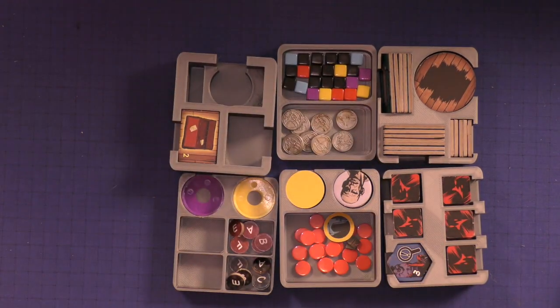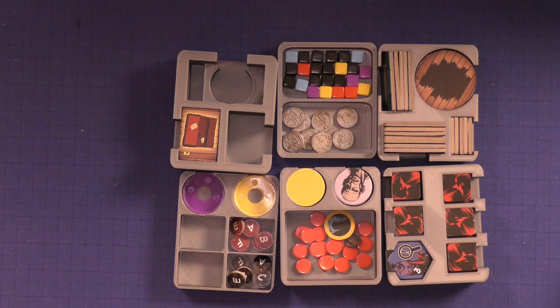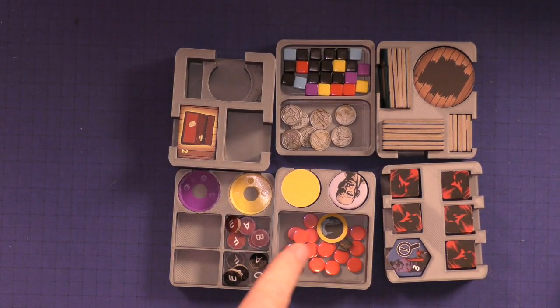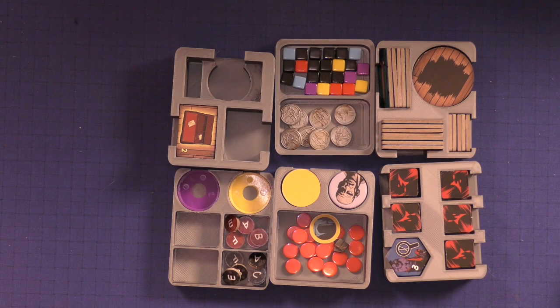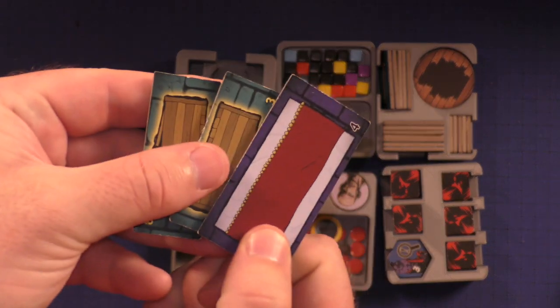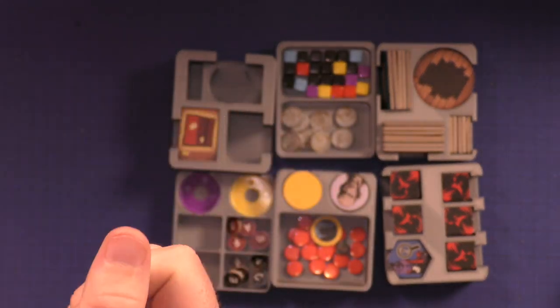So Buddy Amai had this 3D insert made for Hellboy, and it has a place to put all the little components. It didn't have a place to put the 3s and the 4s, so these are just sitting back in the box.